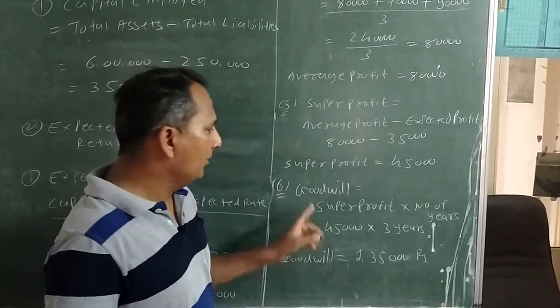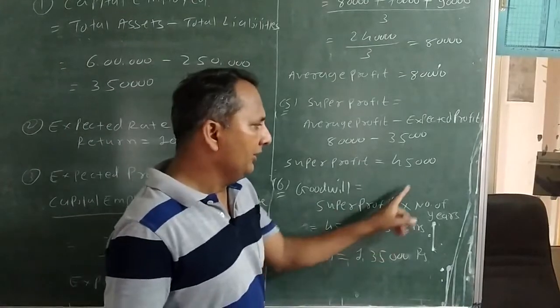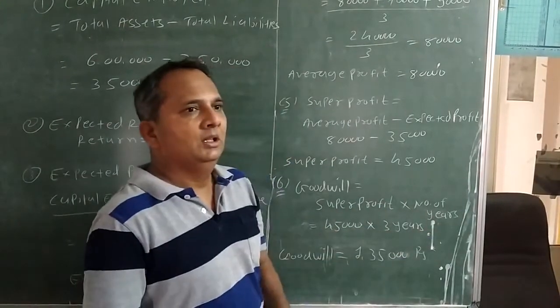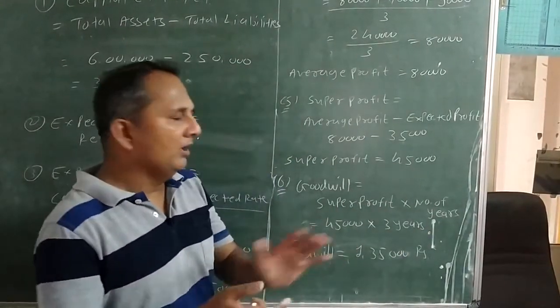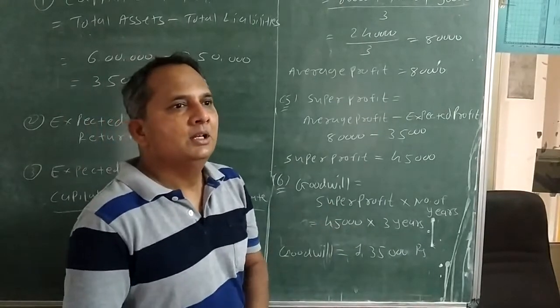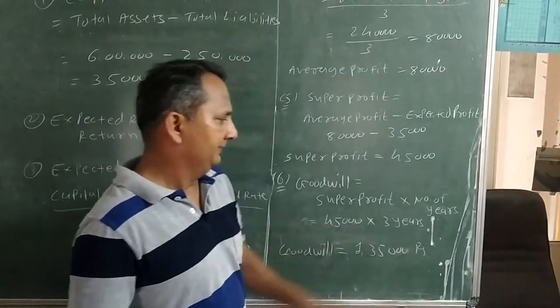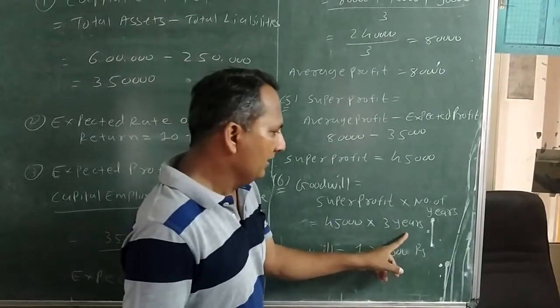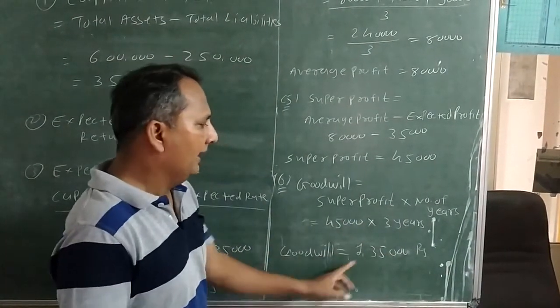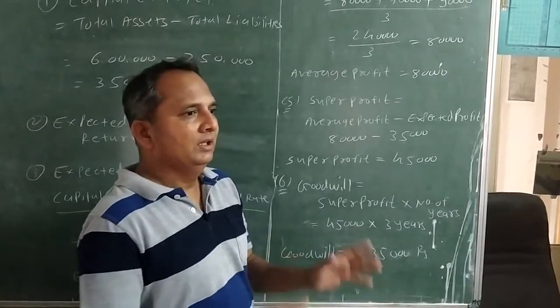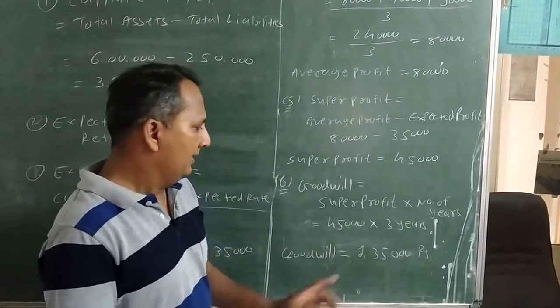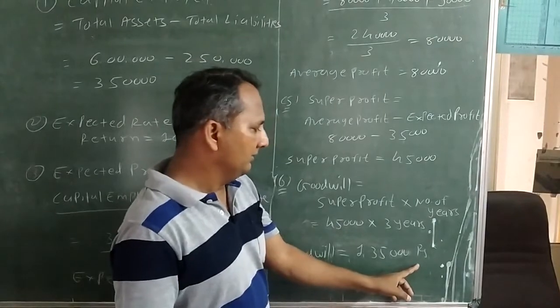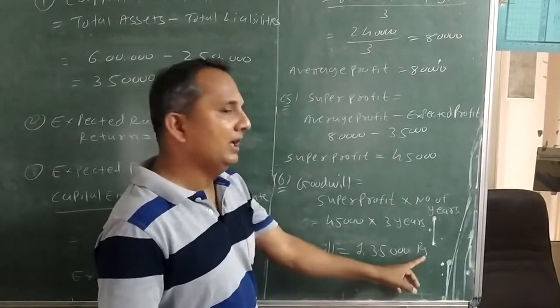Now step 6. Here formula of goodwill is super profit into number of years. You can see that in the sum, number of years is given 3 years. Now super profit 45,000 into 3 years is equal to 1,35,000. Here value of goodwill is equal to 1 lakh 35,000.